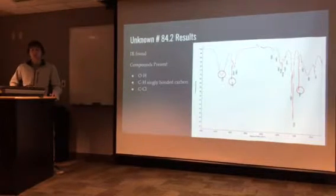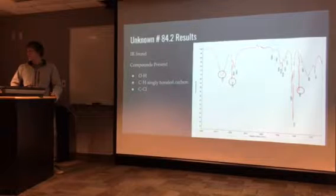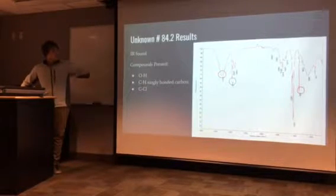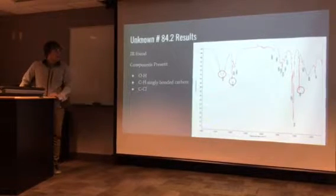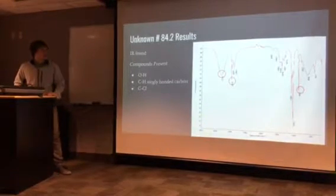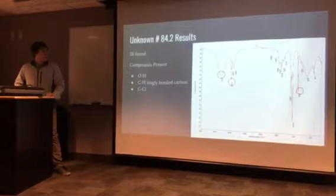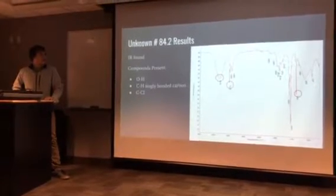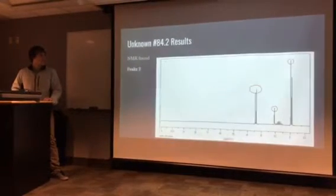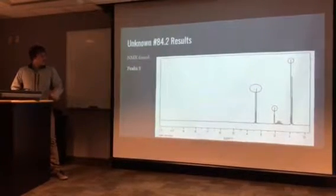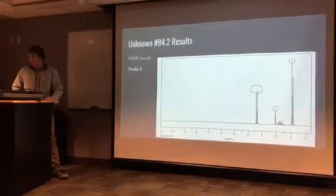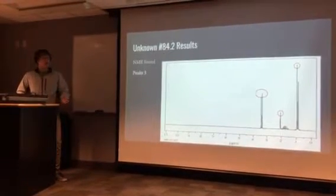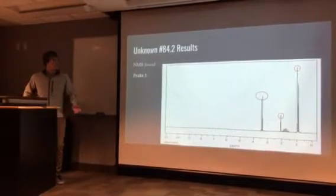We also found carbon bonded with chlorine, which are circled with the red circles as they were found on the IR spectra. We used the NMR, and from the NMR it was found that it has three peaks, highlighted with the red circle.